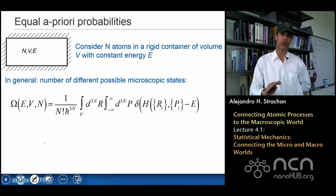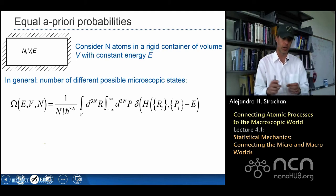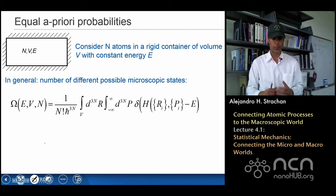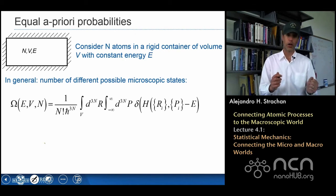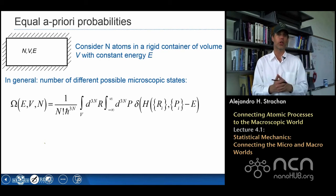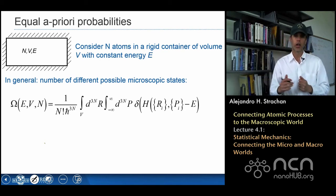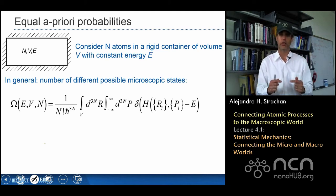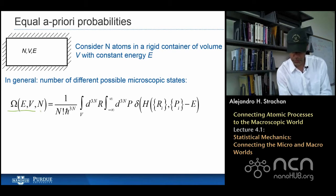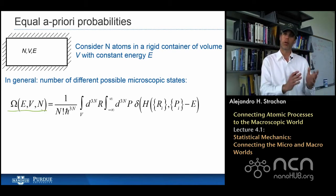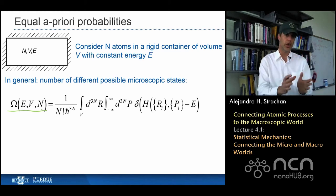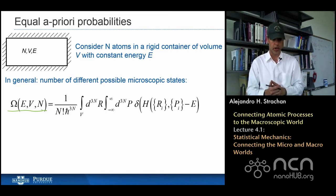What we're going to postulate — and take as a postulate, justified by the predictions we will make — is the postulate of equal a priori probabilities: all available states, all states consistent with the energy, will have equal probability. Let's write a general expression for the number of states omega — omega is the number of microscopic states with energy E, inside the volume V, given N atoms.